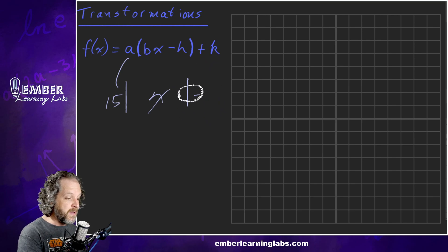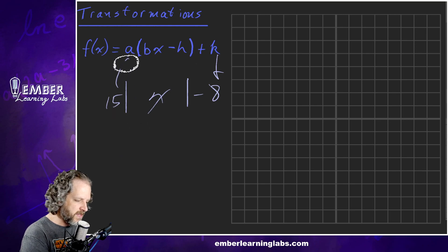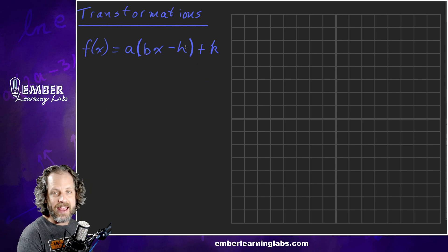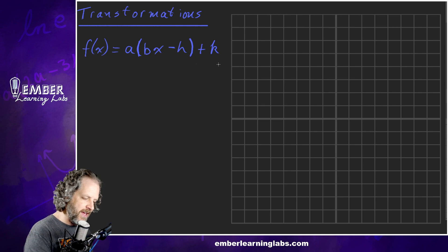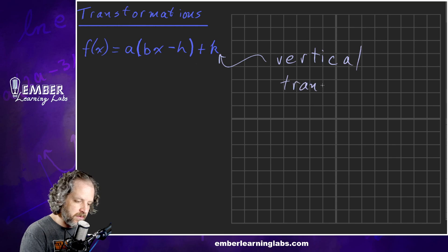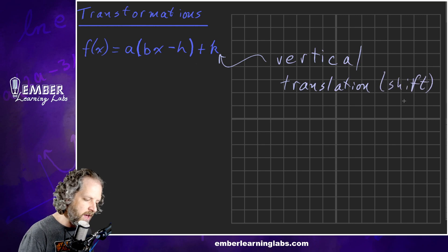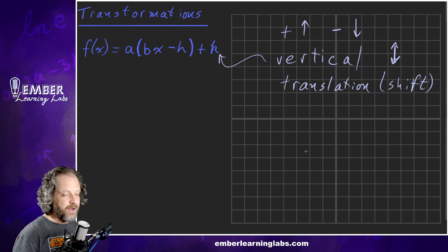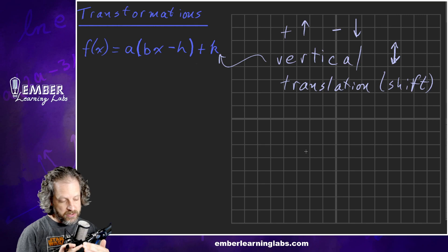Let's get this labeled and then we'll see some examples — put some meat on the bones and see what it does to the pictures. How do A, B, H, and K change or transform the function? Starting with K: it is a vertical translation, which you could also call a shift. This moves your function up or down. If K is positive, it moves up; if K is negative, it moves down. So if it was plus two, it would move the function two up; if minus two, it would move it two down.